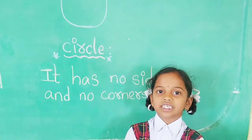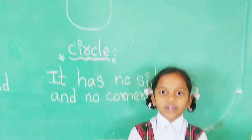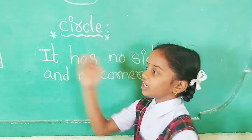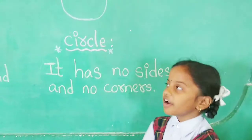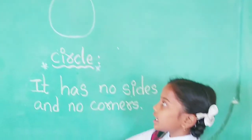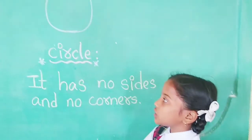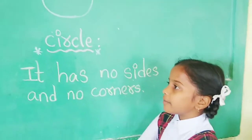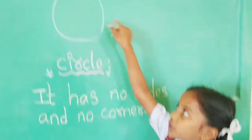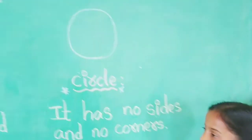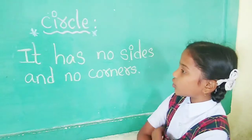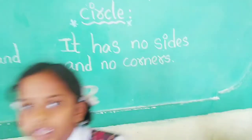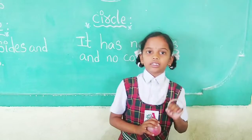Hi, my name is Sanskriti. Today I am going to explain you about geometrical figures. My figure name is circle. Circle is made up of curves only. It has no sides and no corners. Example of circle: bangle.